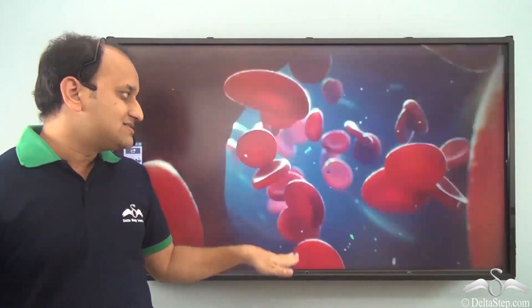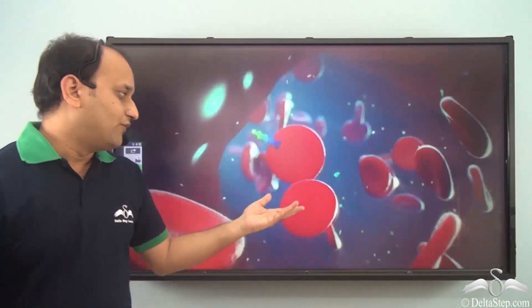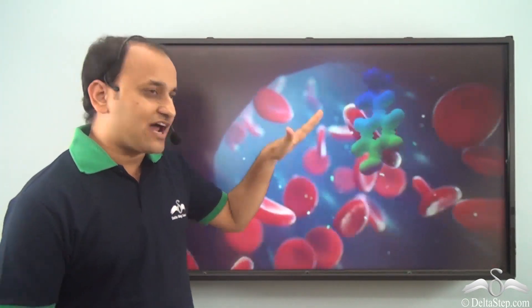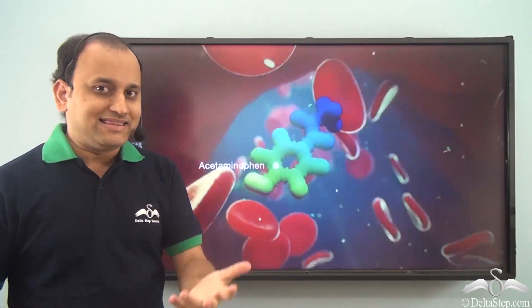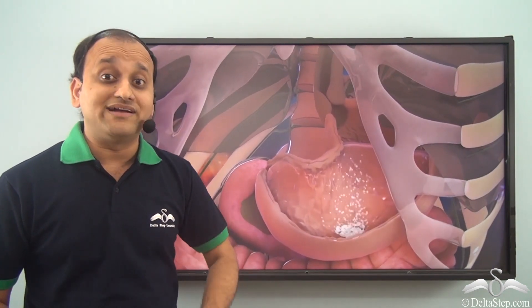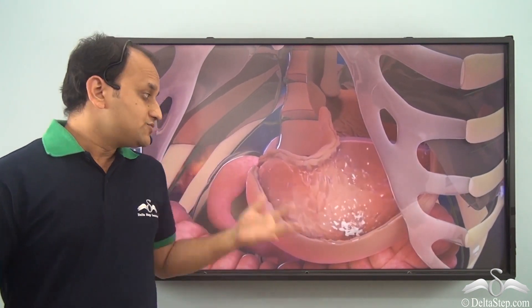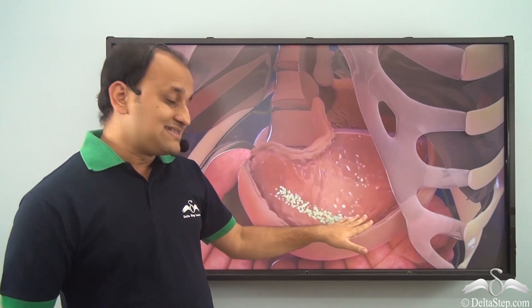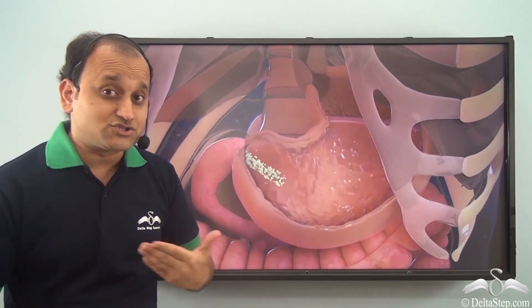So once these chemicals are released in our body, well these chemicals travel inside our body and then these chemicals try to react with other chemicals which are already present in our body. So what are these medicines? These are again products of chemistry.